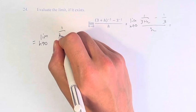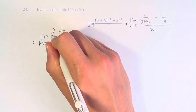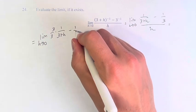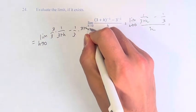So we multiply 1 over 3 plus h times 3 over 3, and 1 over 3 by 3 plus h over 3 plus h.